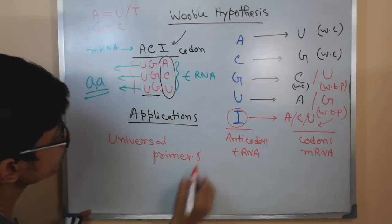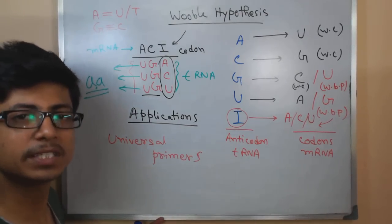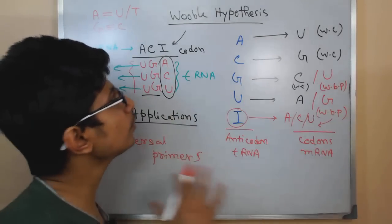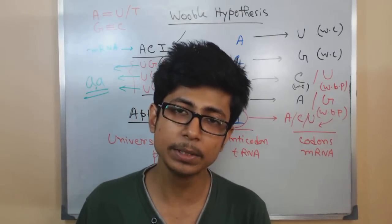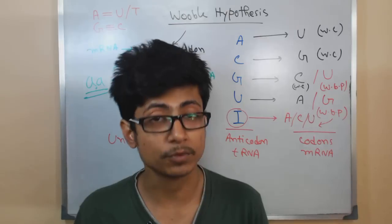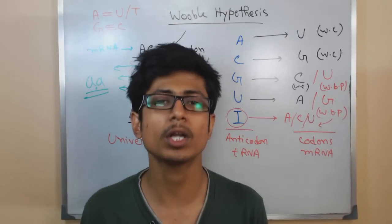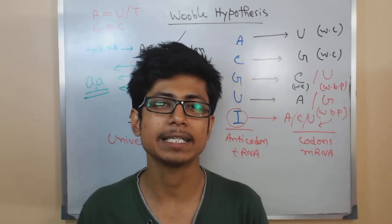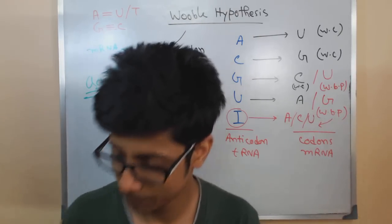These types of primers are called universal primers, used in universal PCR reactions. That is an overall summary of wobble hypothesis. I hope you understood the video. If you like the video, please hit the like button, subscribe to my channel for future videos, and share it with your friends on social networks. Thank you.